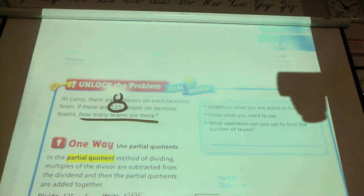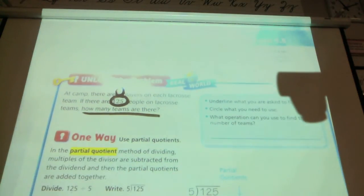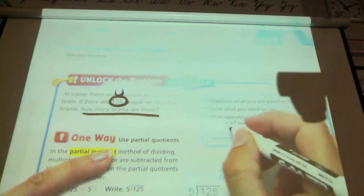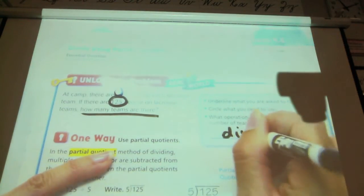And now we have to decide what mathematical operation are we going to use to solve this problem. Raise a hand when you have a guess. What operation can you use to find the number of teams? Division. Go ahead and write it in.